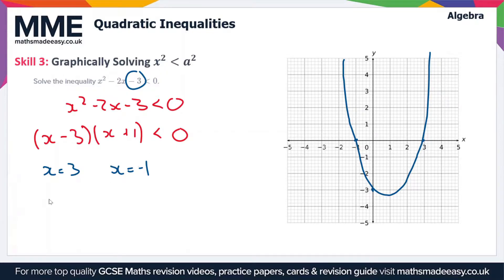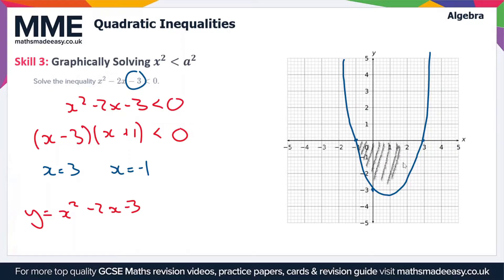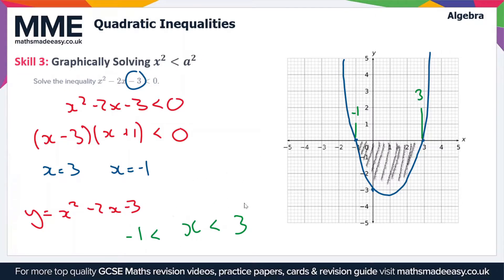What we've drawn is the graph of y equals x squared minus 2x minus 3, to make a visual representation of our inequality. We're looking for the solutions where x squared minus 2x minus 3 is less than 0, so we need the points where the graph goes below the x-axis, where y is less than 0. This shaded region falls between x equals minus 1 and x equals 3, so our solution is minus 1 less than x less than 3. Whenever you get an inequality in the form x squared less than a squared, you get a range of values as your solution.